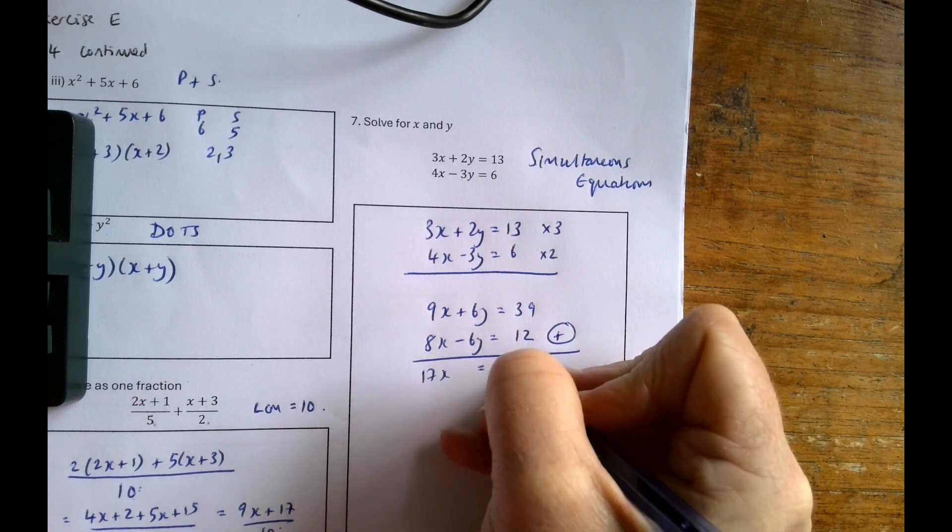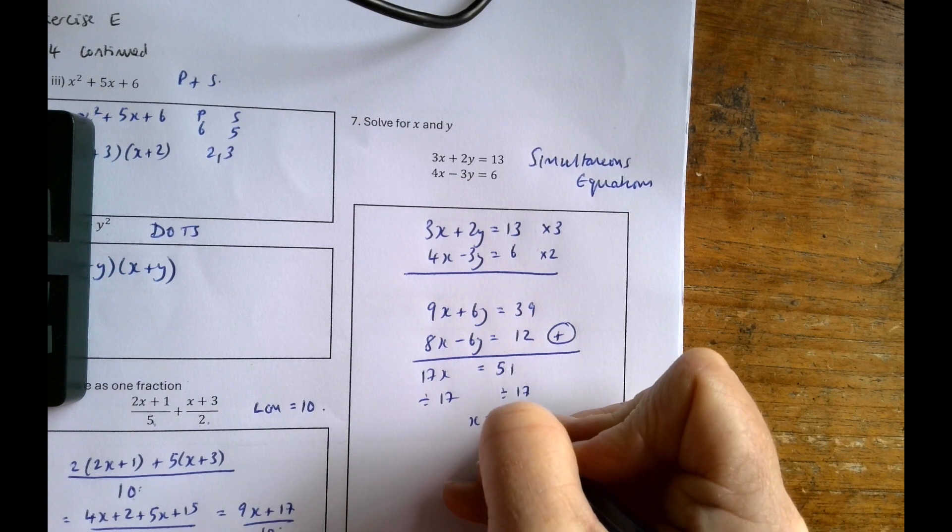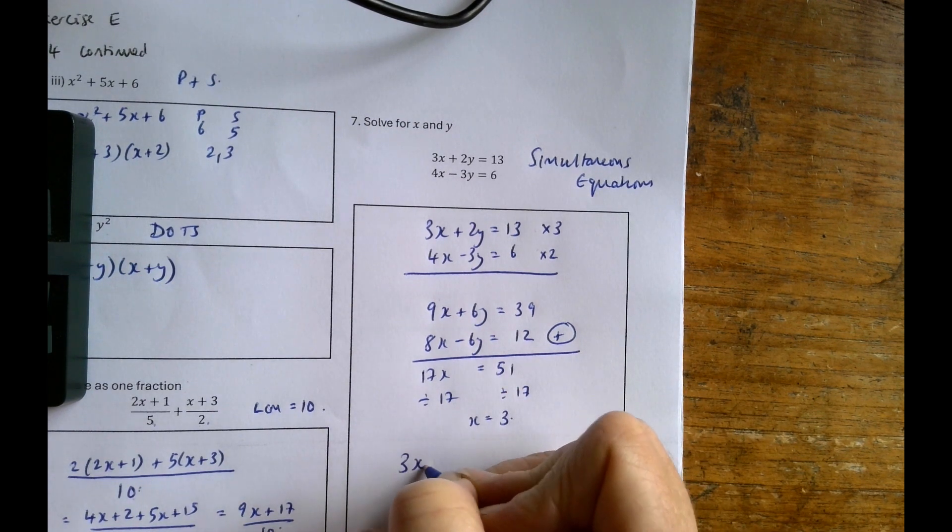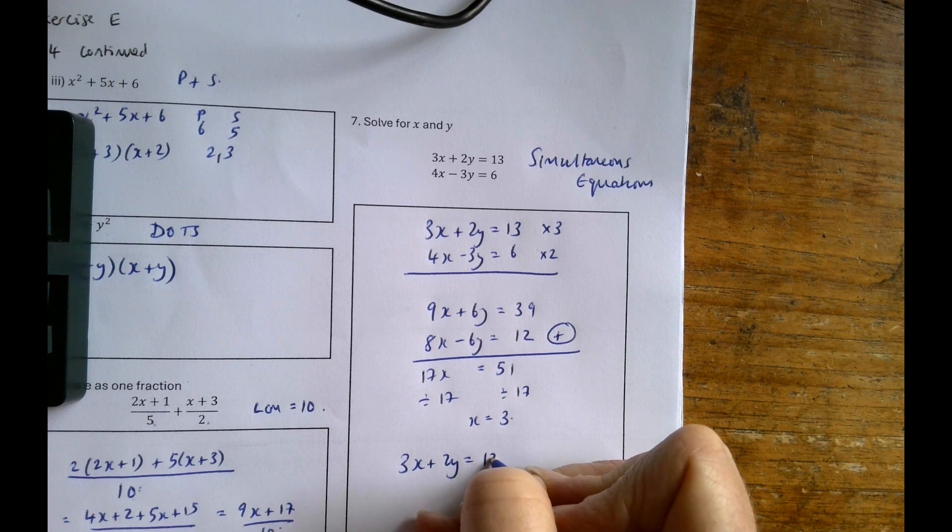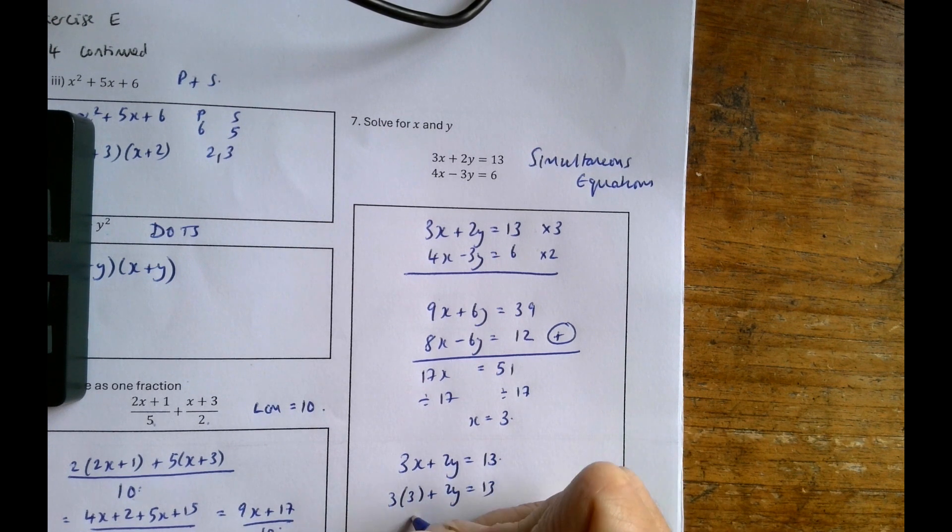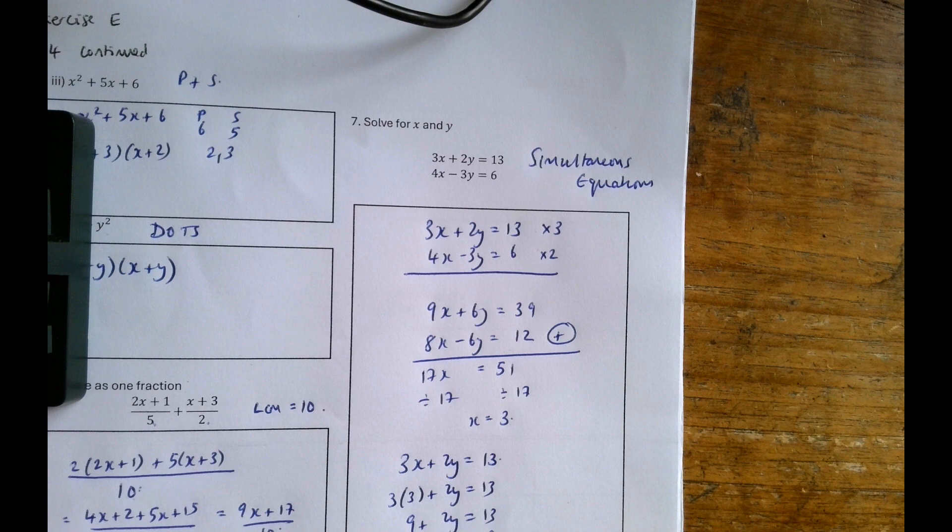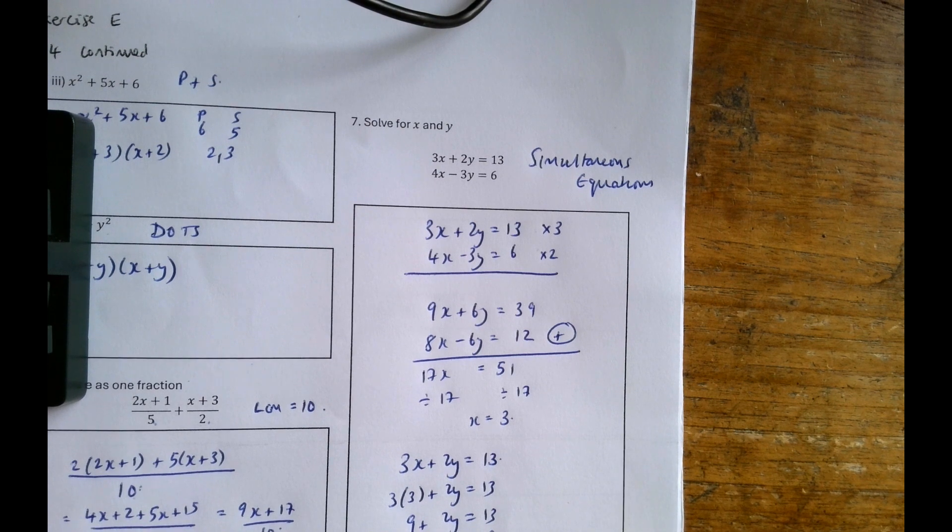17x is equal to 51. So 1x is equal to 51 divided by 17, which is 3. And then I've got 3x plus 2y equals 13. So 3 by 3 plus 2y equals 13. 9 plus 2y equals 13. So 2y is equal to 4. So y is equal to 2.